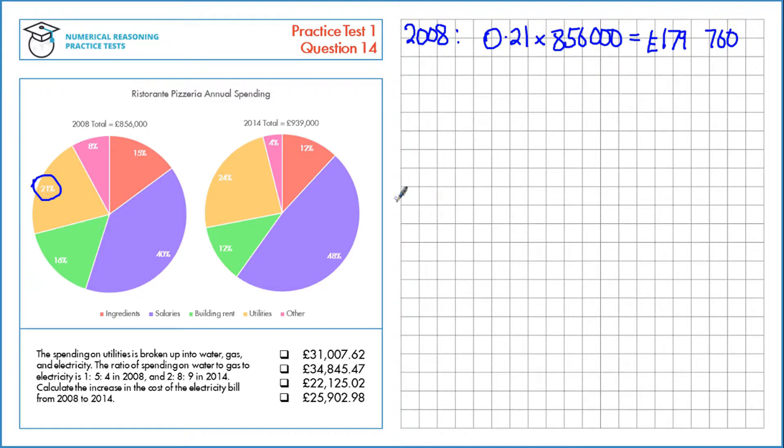Now that we have the amount spent on utilities, we need to know how much of that is spent on electricity. If it's 1 to 5 to 4, and this is water, gas and electricity, then electricity represents 4 parts out of a total of 10, so 4 tenths.